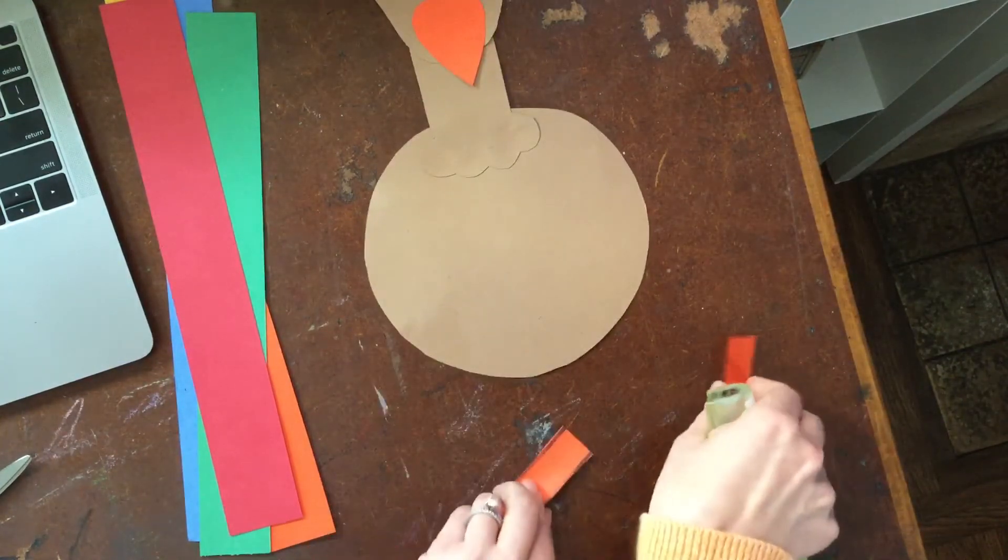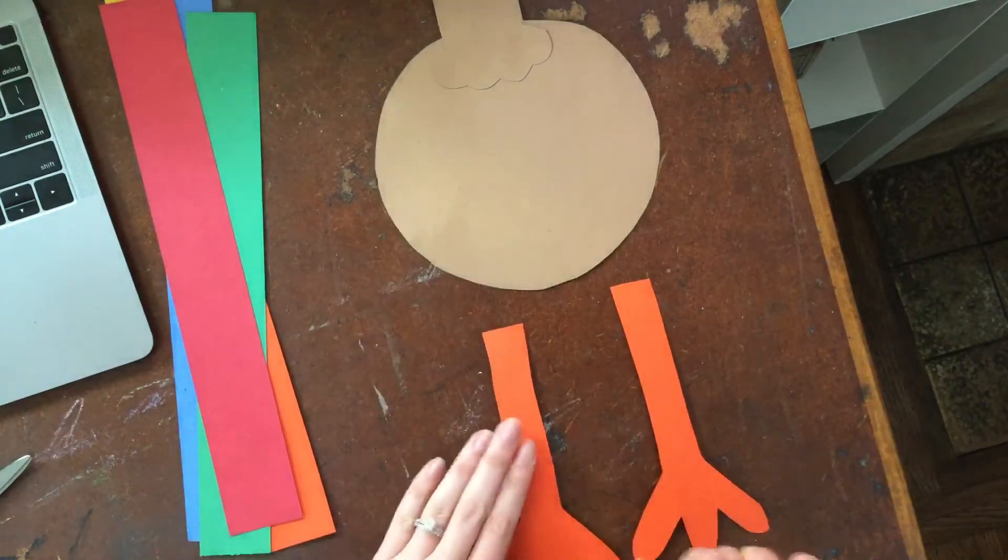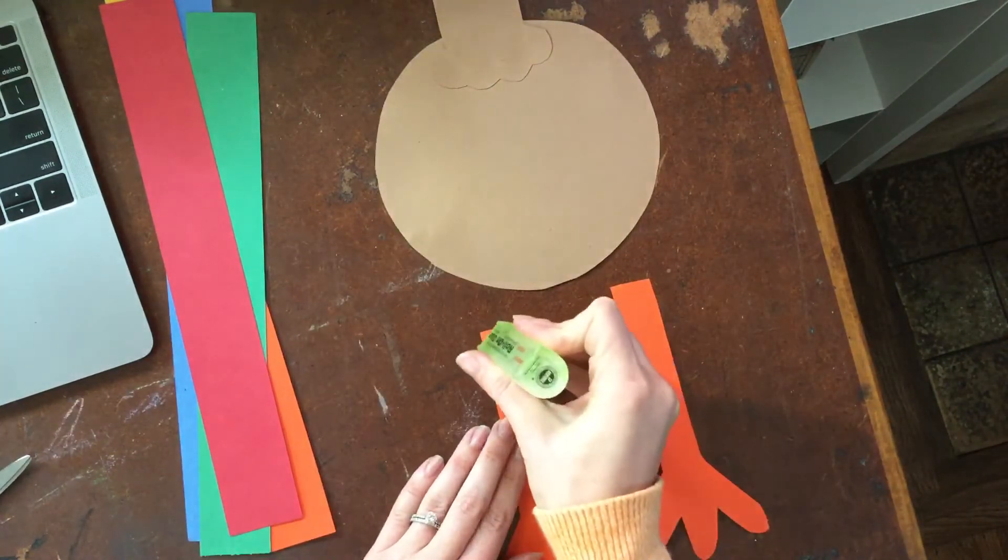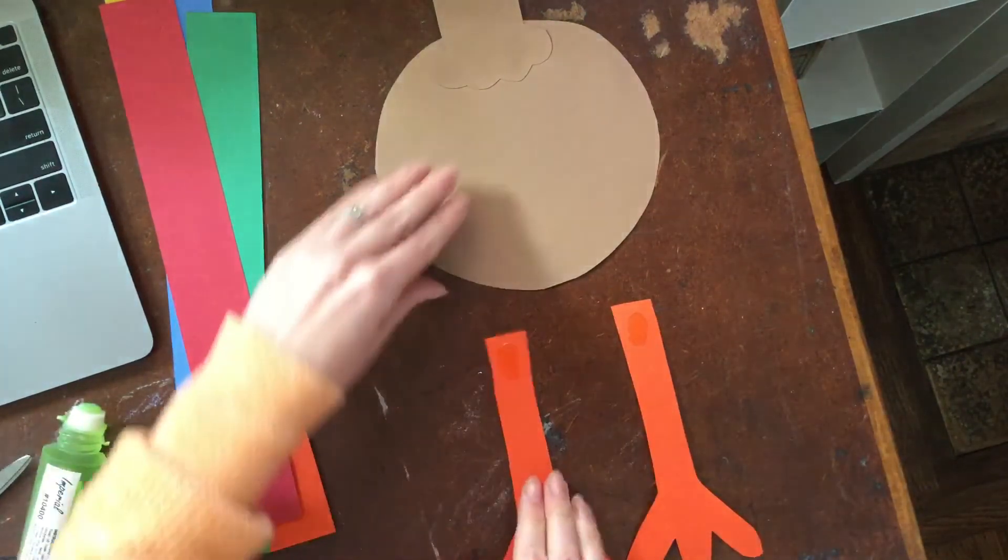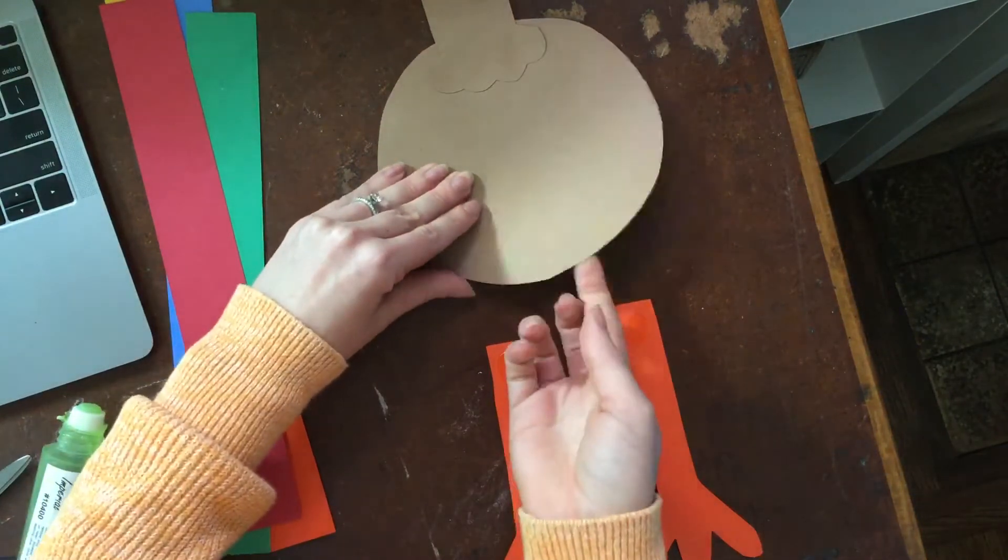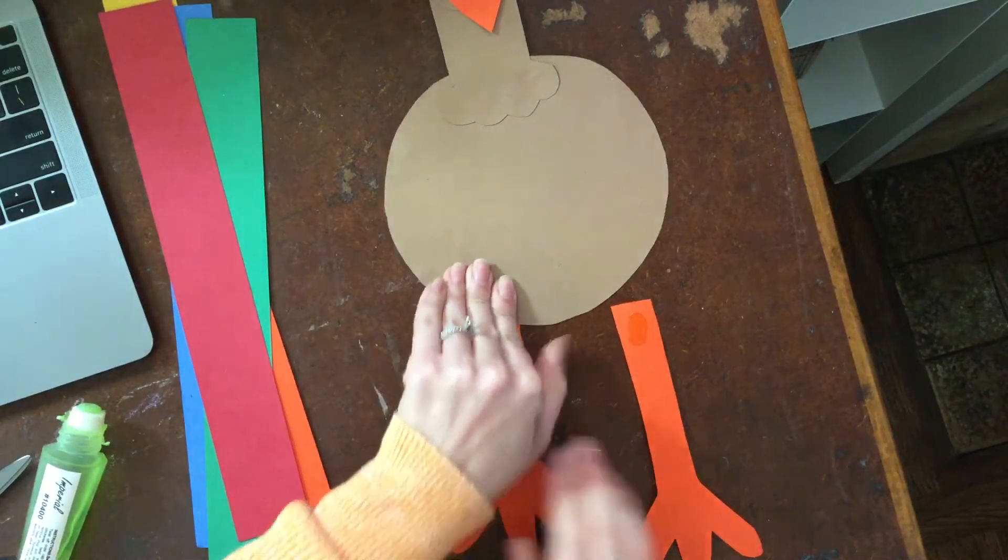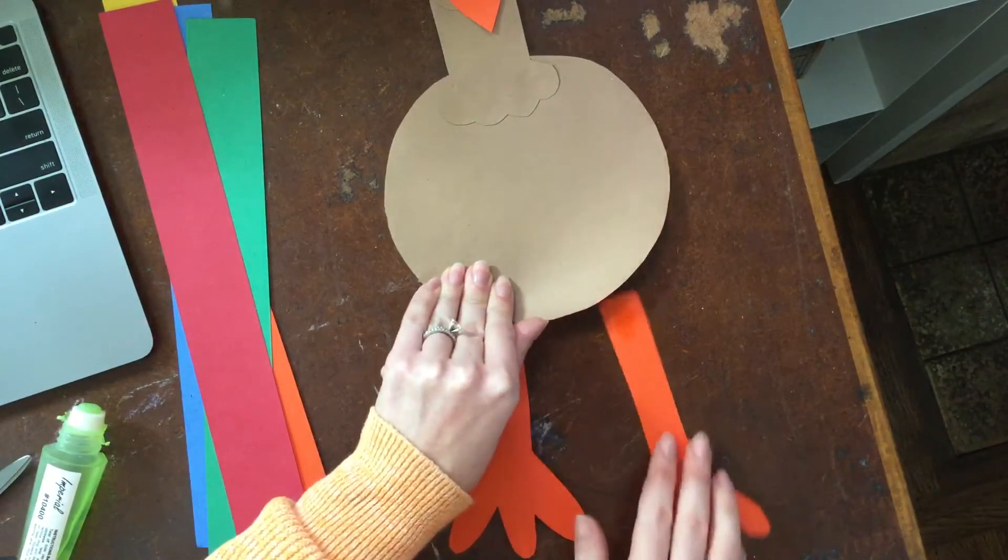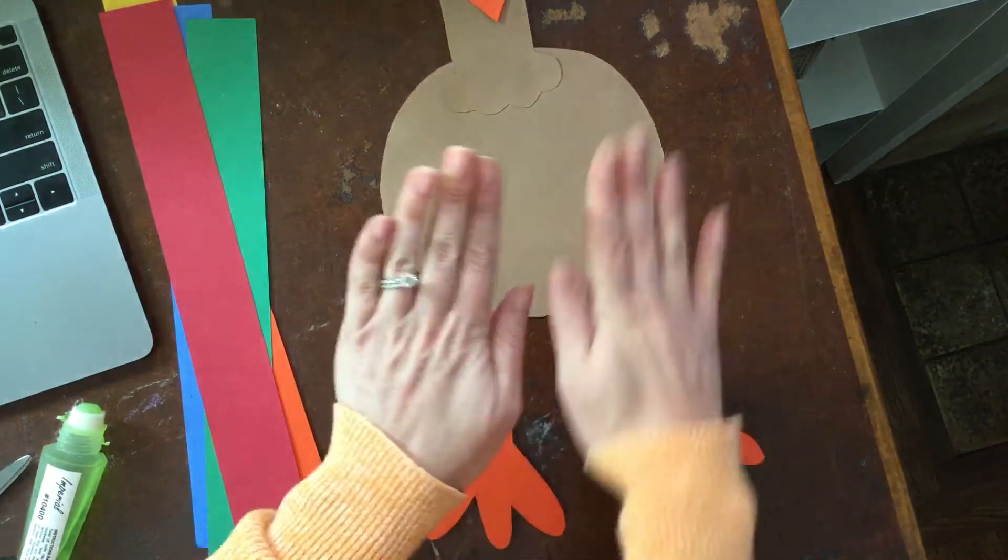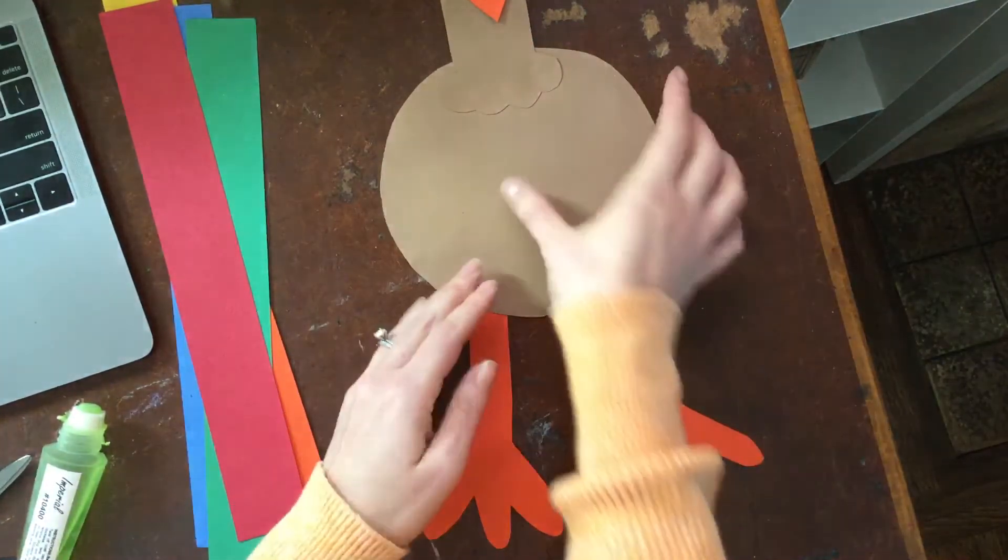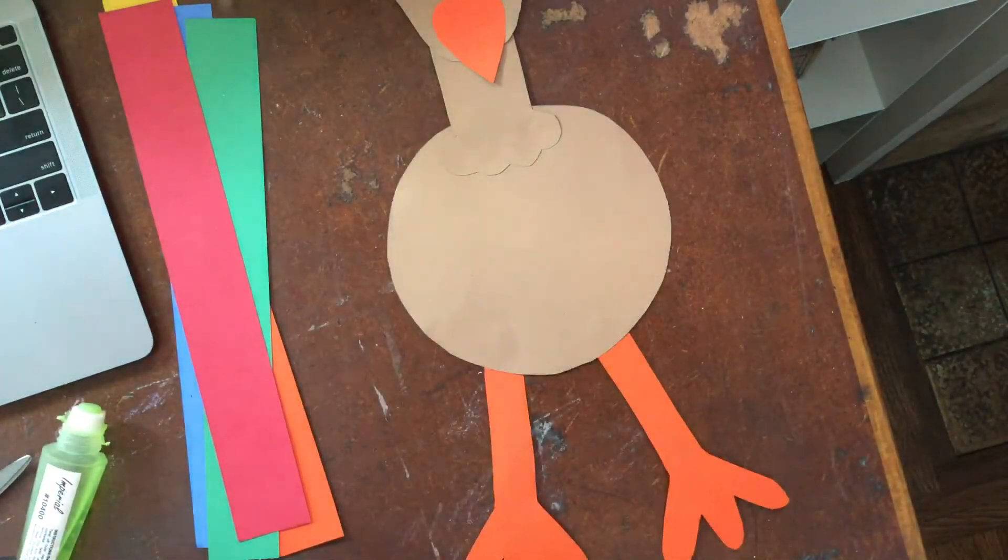And then I'm going to turn the legs so that the black lines are on the back. And I'm going to put a little bit of glue on the top of the legs. And then I'm going to lift up my turkey and put one leg behind like that. And then lift it up and put one behind like that. So we want the legs coming from behind. We're not going to stick them on the front. We want them on the back.